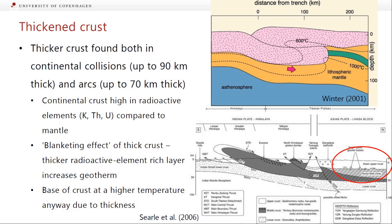In terms of thickening crust, this does a bit of both. We're both making the base of the crust deeper, so we've got more time for that geotherm to cross the solidus, and it also actually ends up increasing the temperature. We get thicker crust in both continental collisions and in continental arcs. In continental collisional zones, at the extreme end, you have the Himalayas and the Tibetan plateau, and the crust underneath Tibet is up to 90 kilometers thick. Under parts of the Andes, it gets up to about 70 kilometers thick. Because continental crust is really high in radioactive elements compared to the mantle, you basically build up this thick radioactive layer — it's almost like having an electric blanket, keeping you warm and producing more heat than if the crust were thin and underlain by mantle.